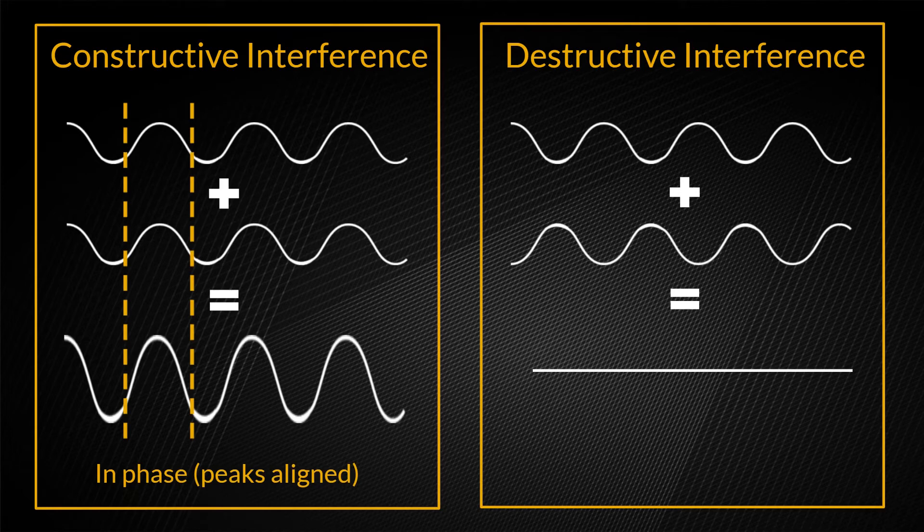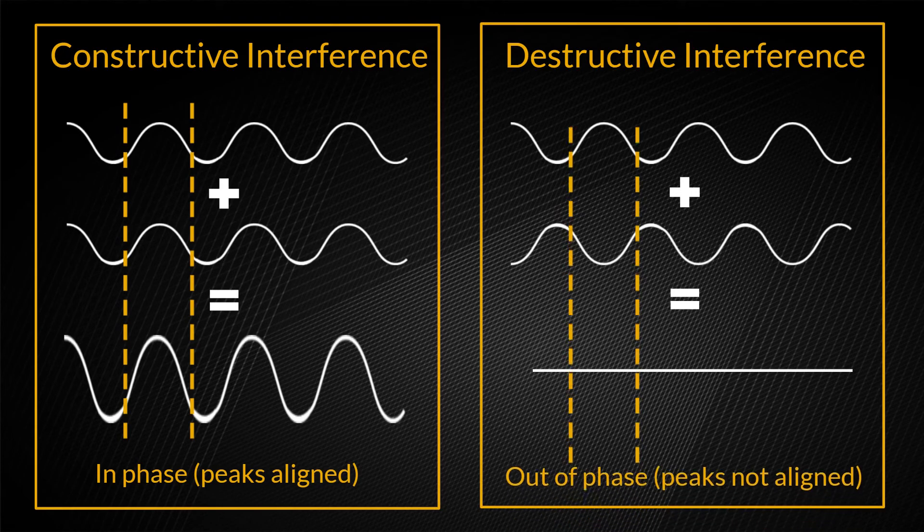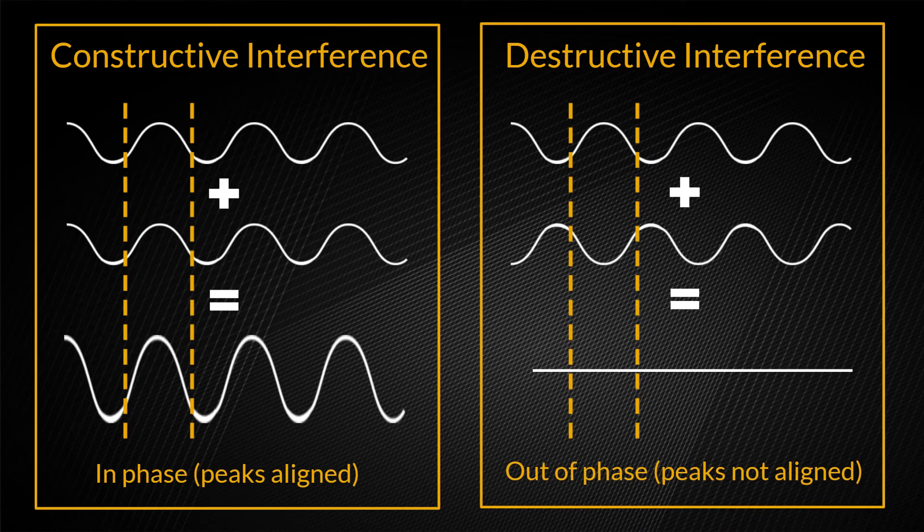When the wave peaks line up with each other, we get constructive interference. When the peaks do not line up with each other, we get destructive interference.